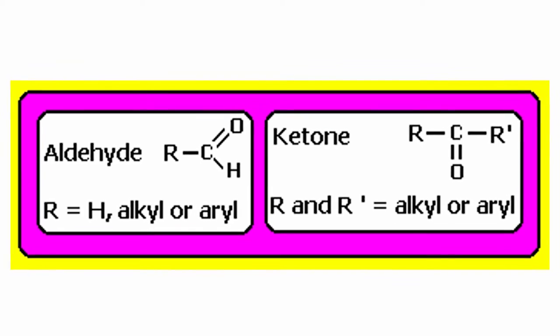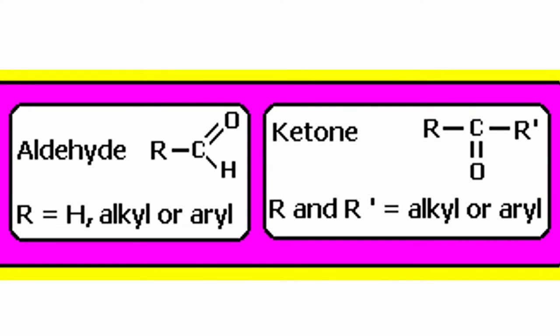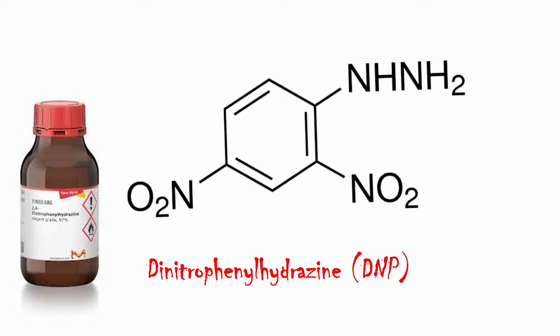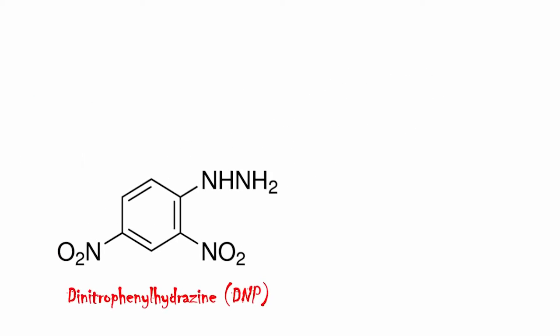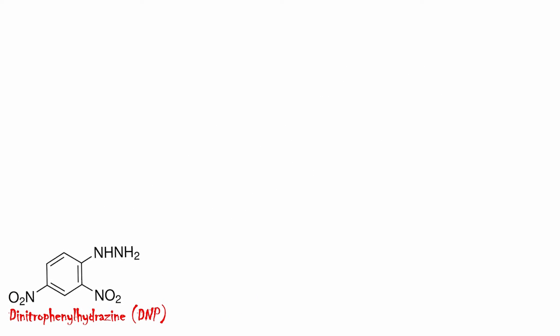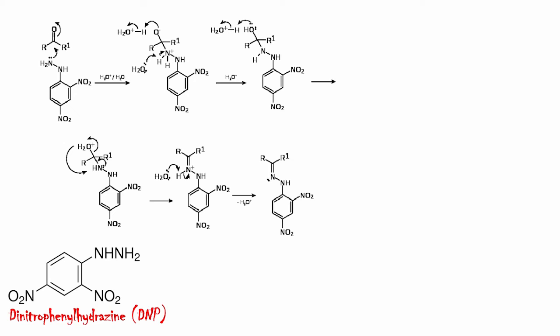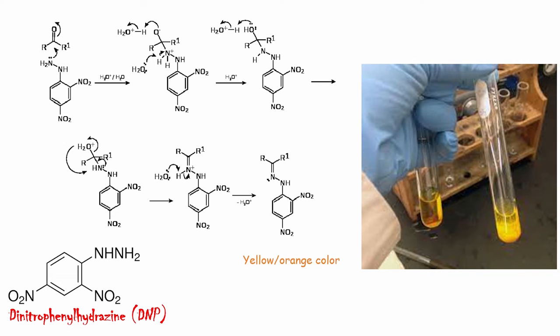Now, if your product is having aldehydes and ketone groups present, then we can use DNP dinitrophenylhydrazine. Developed mainly for aldehydes and ketones. They react with aldehydes and ketones and form corresponding hydrazones which are usually yellow to orange color.